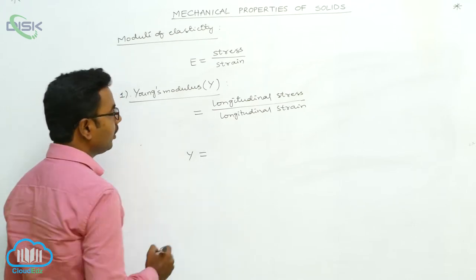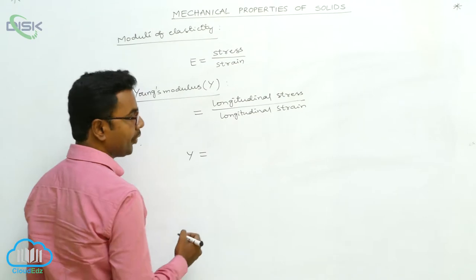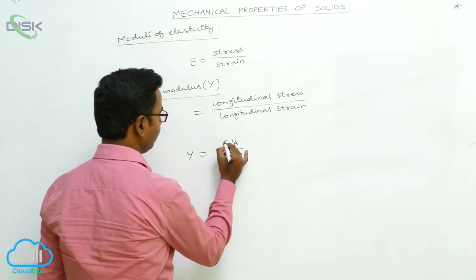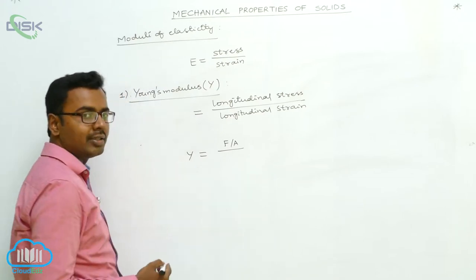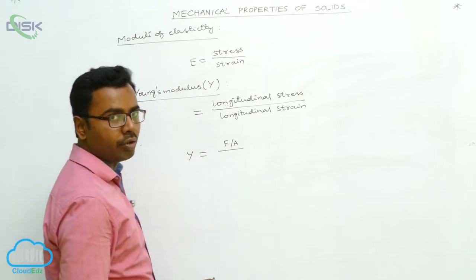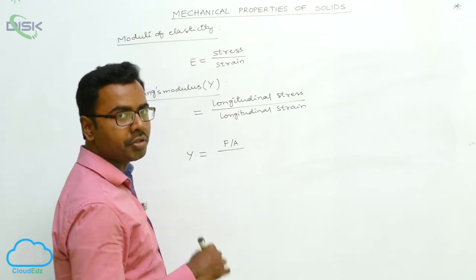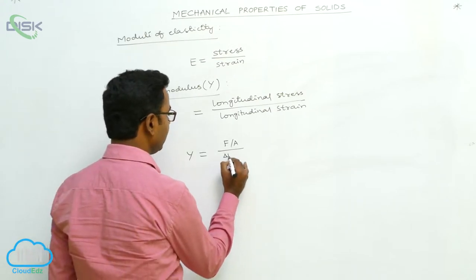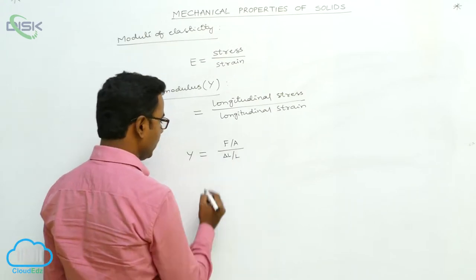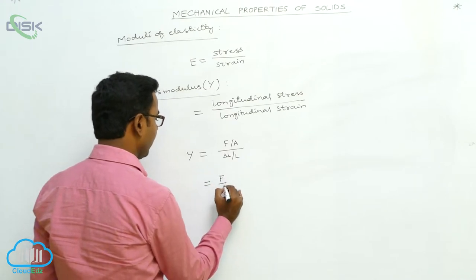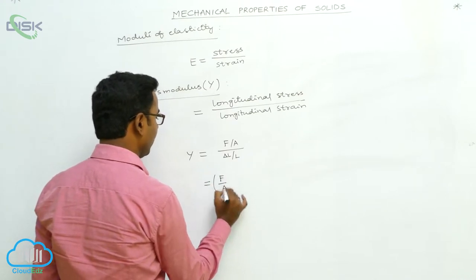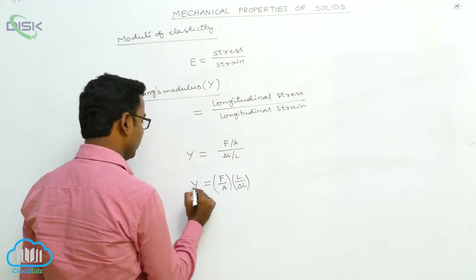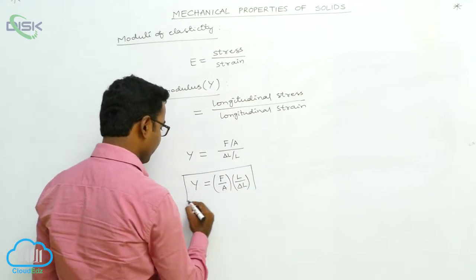Young's Modulus is given by the formula: longitudinal stress is the applied force by area, F by A. Longitudinal strain is the change in length by original length, delta L by capital L. So we can write Y = (F/A) × (L/ΔL). This is the formula for Young's Modulus.